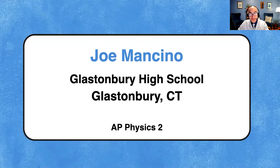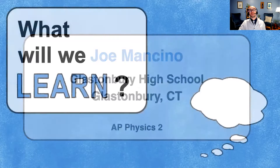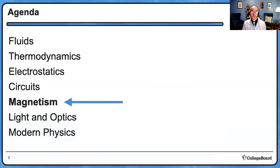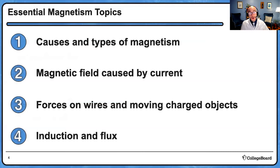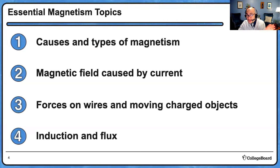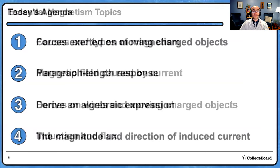I'm Joe Mancino from Glastonbury High School in fantastic Glastonbury, Connecticut, home of the Guardians, ready to work with you on magnetism. Today, we are almost through the course. You've worked on fluids and thermodynamics, electrostatics, and circuits. After this session, you'll be joining me for light and optics and modern physics, and then Mr. Stroudermann is going to put it all together in one grand look back.